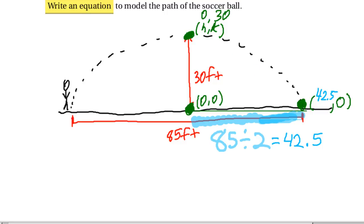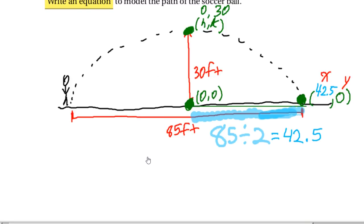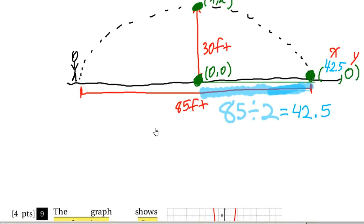Now here's what that tells me. That tells me that I know an x and a y that are on this parabola. I know that all parabolas that look like they're upside down are going to have some type of equation that says y equals a, and it's going to be negative because it's upside down, and then it's going to say x minus h squared plus k.